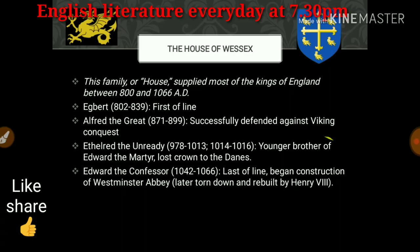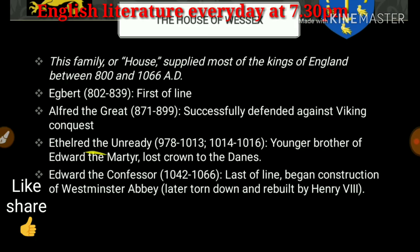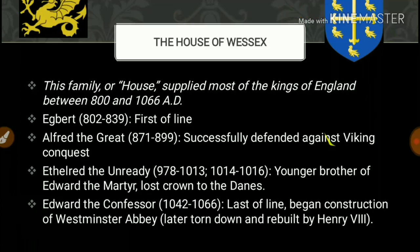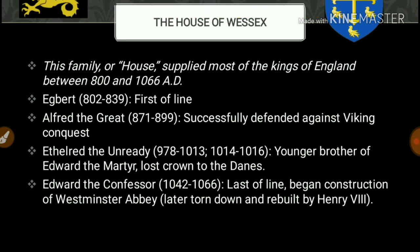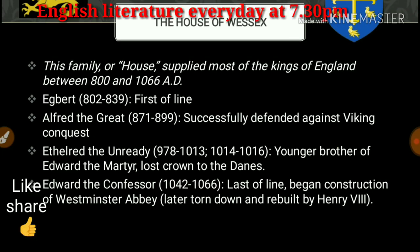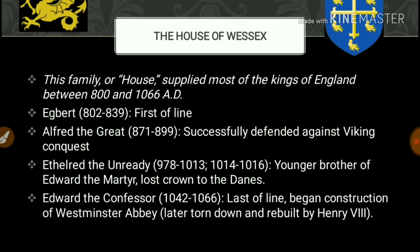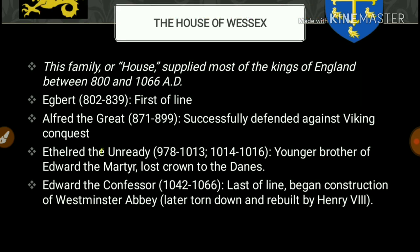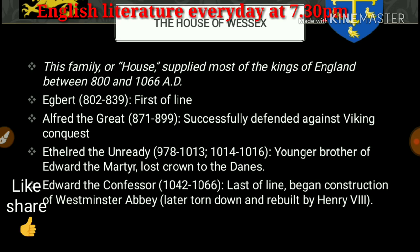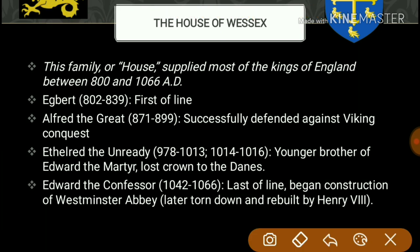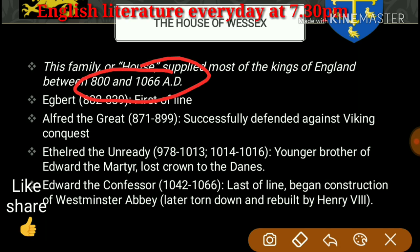We were talking about the timeline yesterday, so one by one we will be talking about the houses. This is going to help you in your exams and in understanding English literature more. The House of Wessex — this family supplied most of the kings of England between 800 and 1066.